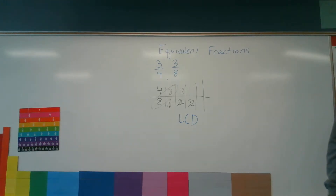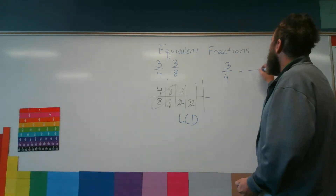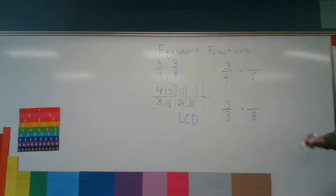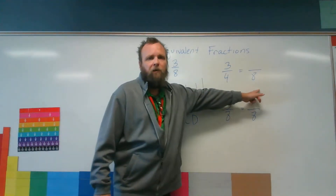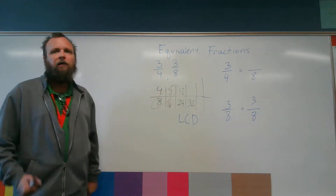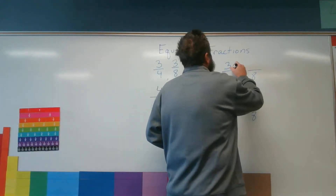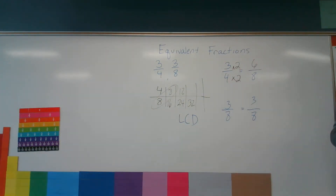8 is our least common denominator, which means I need to change 3 fourths to something over 8, and 3 eighths to something over 8. Well, 3 eighths is already over 8, so 3 eighths stays 3 eighths. Then I ask myself: what did I multiply by 4 to get my common denominator of 8? I can see I multiplied by 2. If you multiply your denominator by 2, you must do the same to your numerator. And 3 times 2 is 6. So 3 fourths equals 6 eighths, and 3 eighths equals 3 eighths.